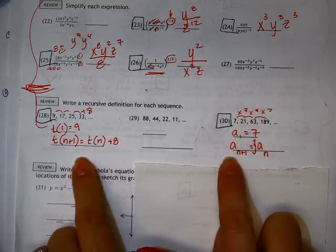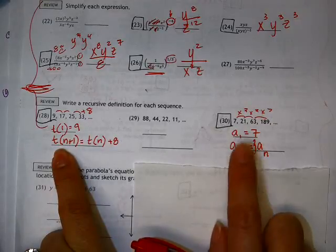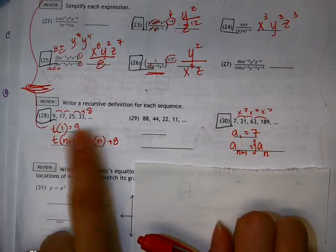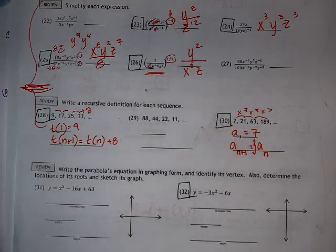So again, these mean exactly the same thing - the a sub 1s and the t sub 1s. The first term, the next term, the term before it, the next term, the term before it.